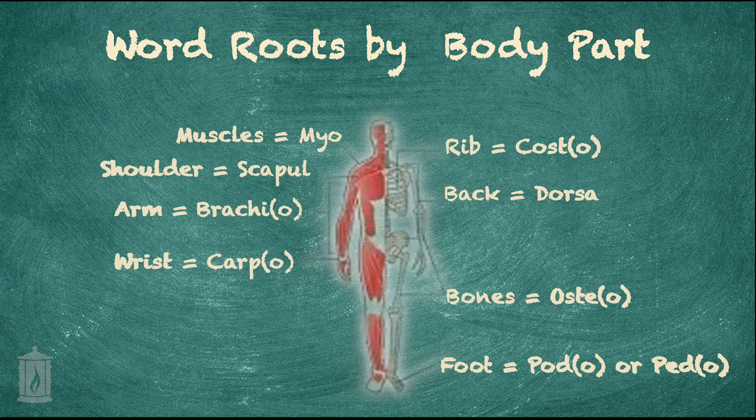Some things to be careful of: the word for muscles is myo, M-Y-O, whereas the term for the spinal cord is myel, M-Y-E-L, with the connective letter O. We have to be careful because there are a lot of words in medical terminology that may sound similar or be spelled slightly similarly, but one letter could change the complete meaning of the word.